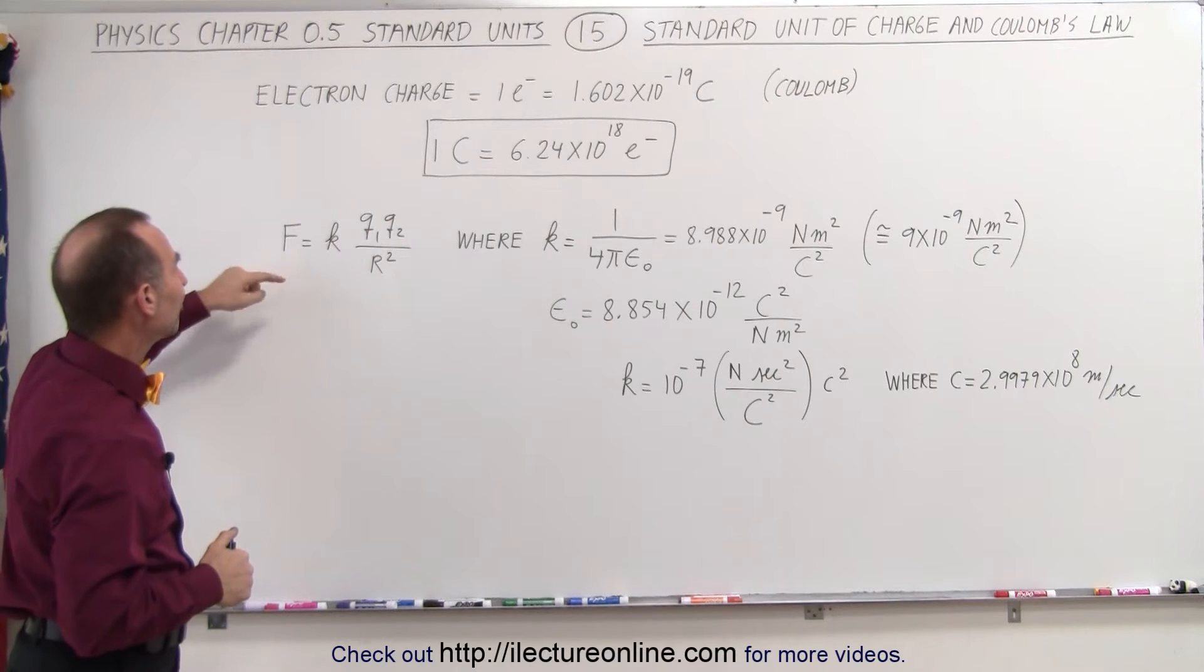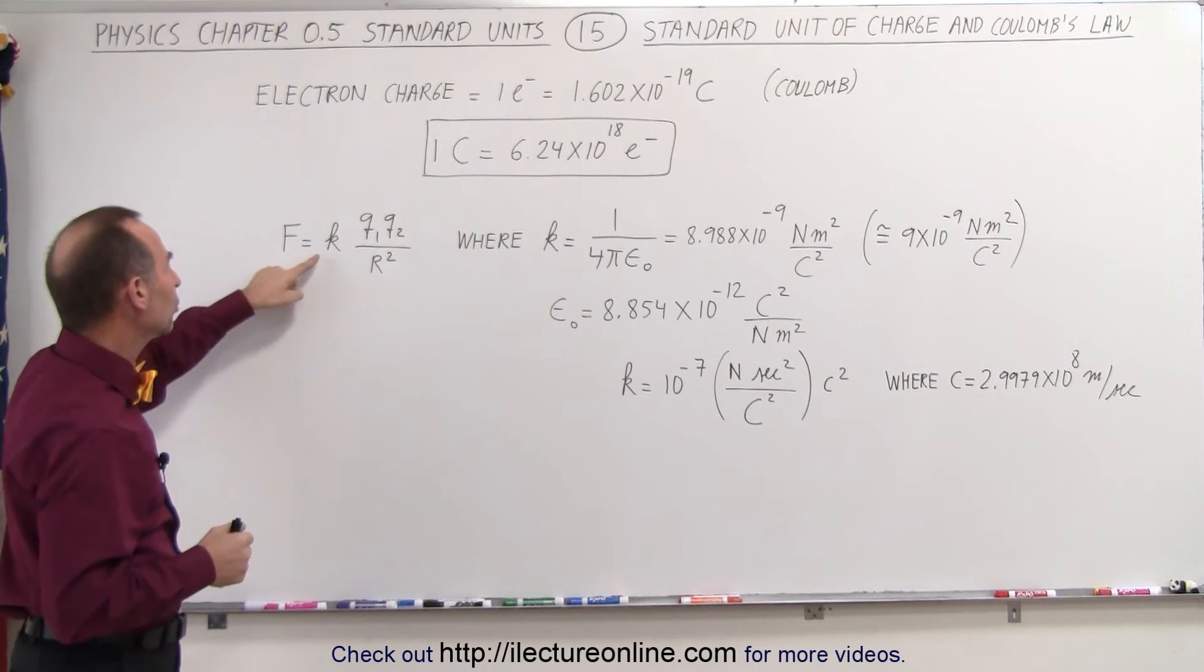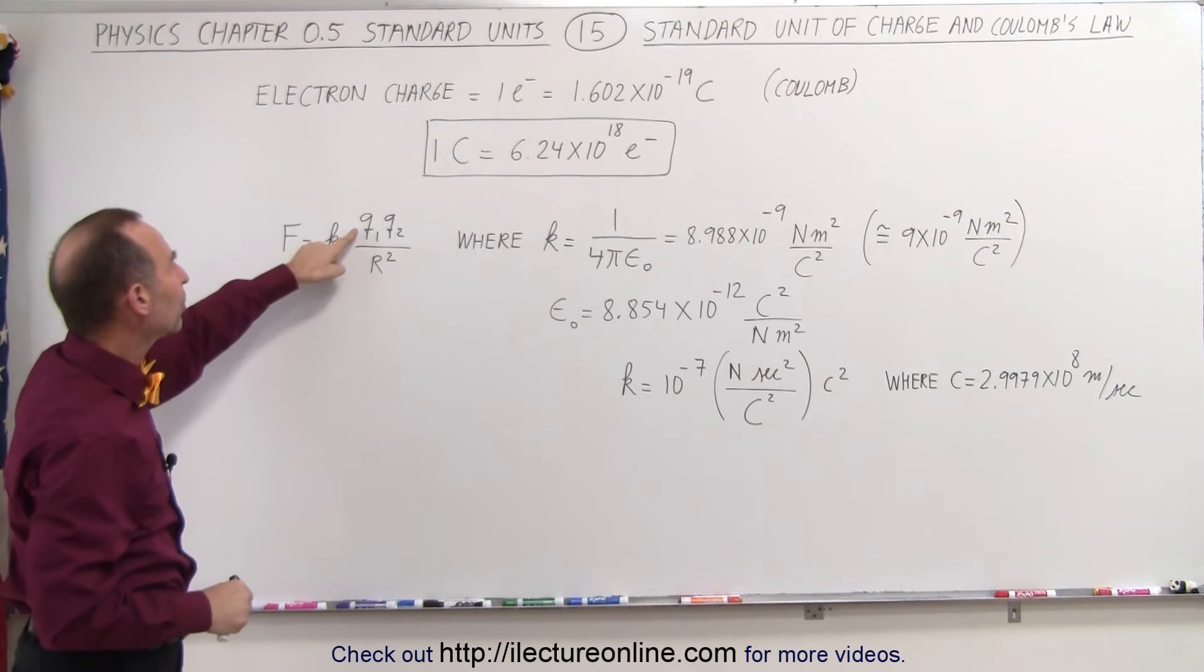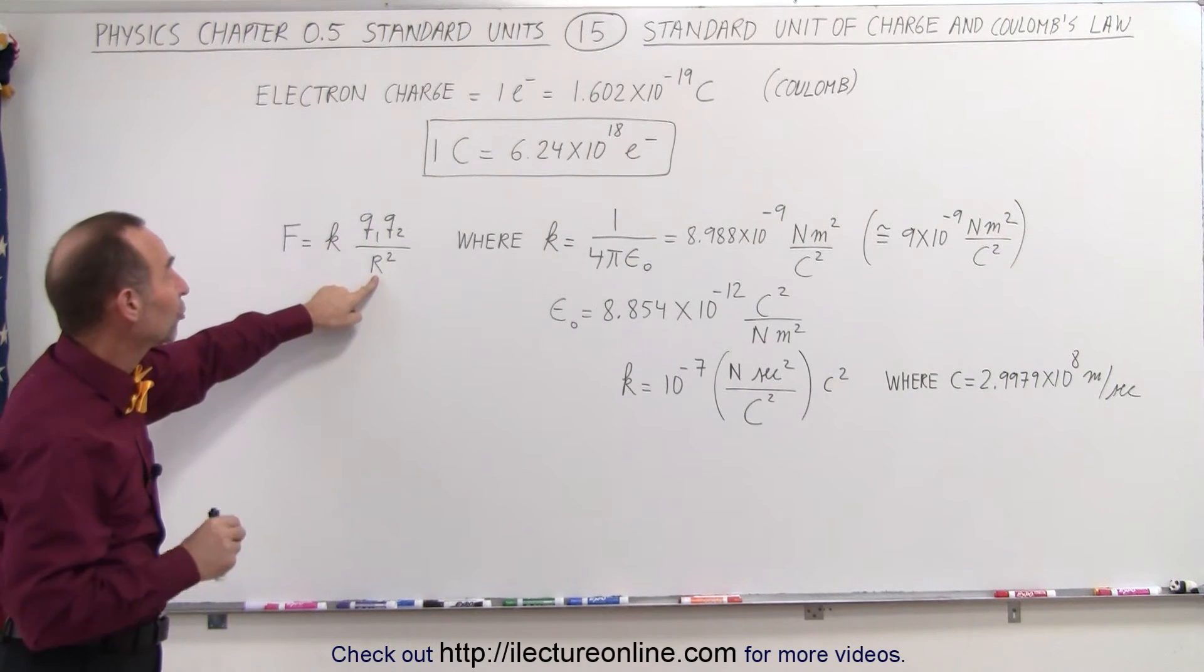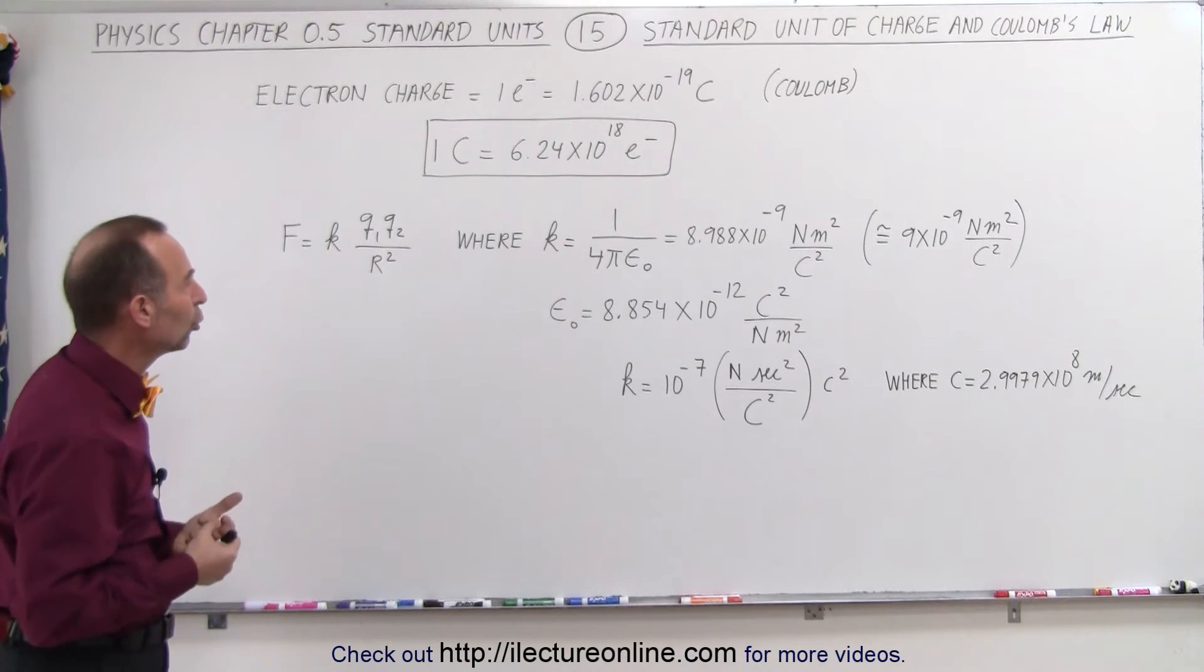Coulomb's law is defined as the force between any two charged objects as being equal to a constant, and we'll define the constant in a moment, times the product of the charges of the two charged objects, divided by the distance between them squared. Q1 and Q2 is typically expressed in terms of coulombs.